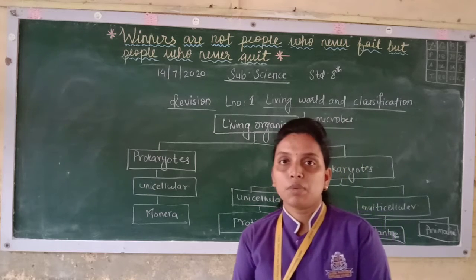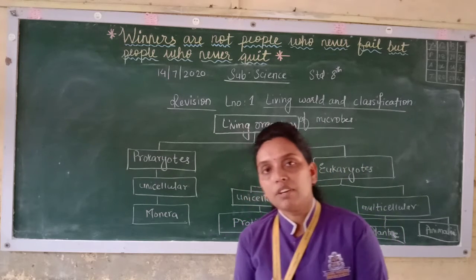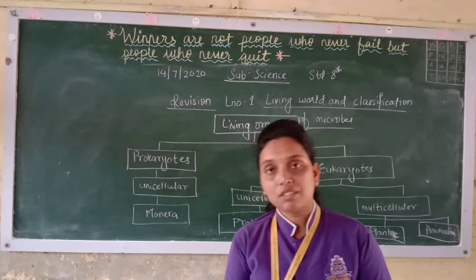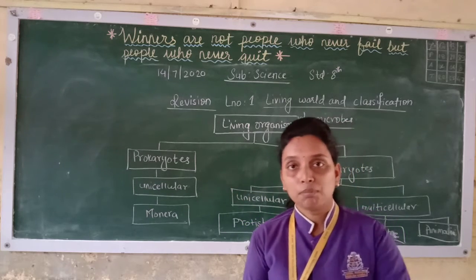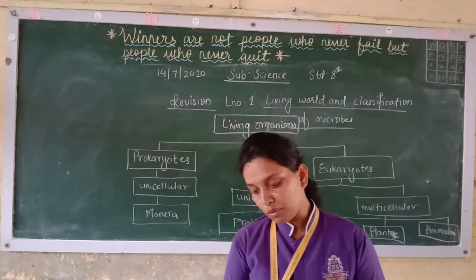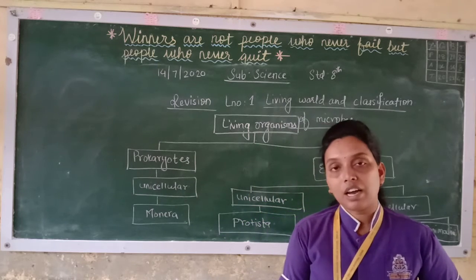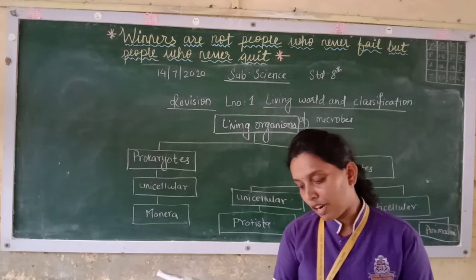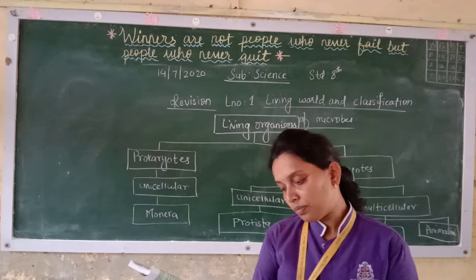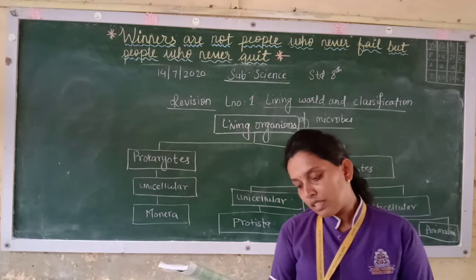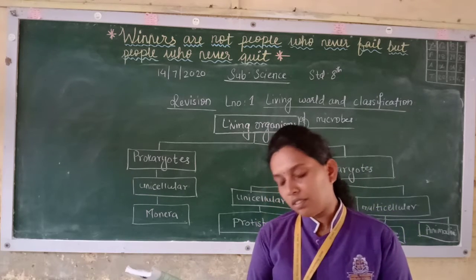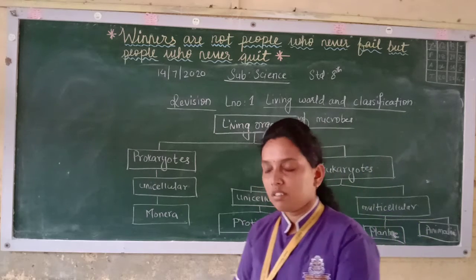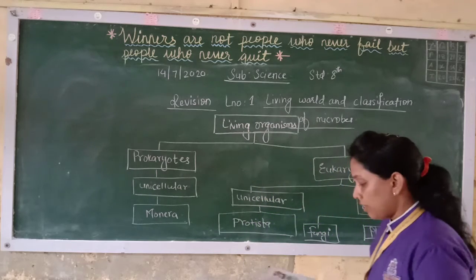Plants are the producers because animals depend on them. Animals are the consumers — they eat the plants. Fungi are the decomposers; they decompose the dead decaying matter. Then there is phylogenetic relationship — from prokaryotic to eukaryotic, that is from unicellular to multicellular.